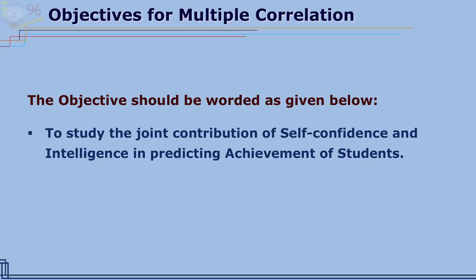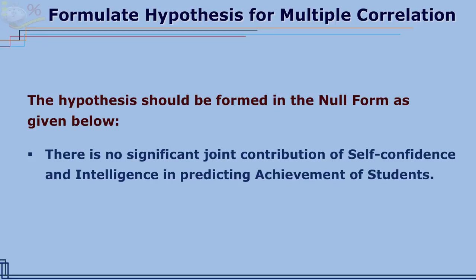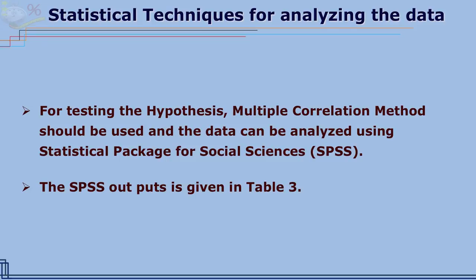Let us take another objective. The objective is to study the joint contribution of self-confidence and intelligence in predicting achievement of students. For this objective, the hypothesis can be formulated in null form: there is no significant joint contribution of self-confidence and intelligence in predicting achievement of students. To test this hypothesis, the multiple correlation method should be used and the data can be analyzed with the help of SPSS, and the output of the SPSS is given in Table 3.